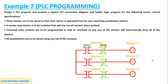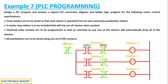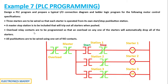The starters are connected to their respective stations. We also need to add two more elements: a master stop station button and an overload relay contact. These are normally closed contacts, because only when pressed should the entire operation stop — that's why normally closed contacts are used here. This is how the input terminals are connected in this particular fashion.